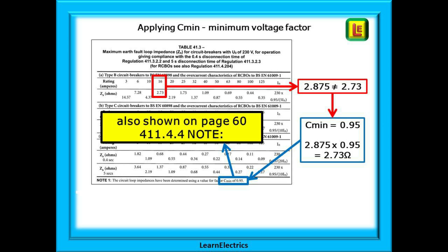Look immediately below the table at the notes. It tells us that there is a C min factor of 0.95 to take into account. This is shown below each of the tables and also shown on page 60 in regulation 411.4.4 under note. C min is the minimum voltage factor and this allows for voltage fluctuations in the supply.